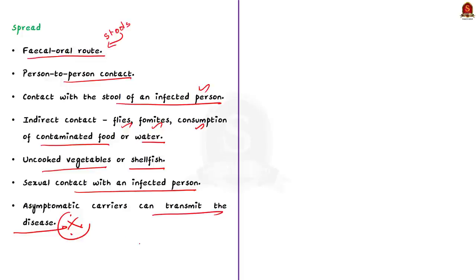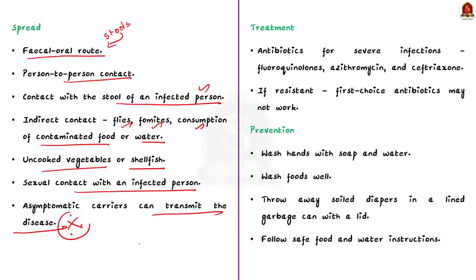Regarding treatment, Shigella bacteria often develop antibiotic resistance, so the first choice of antibiotics recommended may not work. Antibiotics recommended for severe infections include fluoroquinolones, azithromycin and ceftriaxone. Since this bacteria develops antibiotic resistance, it is better to avoid infections by regularly washing your hands with soap and water — before and after eating, after using the bathroom, after changing diapers, before preparing foods, and when coming into contact with an infected person.